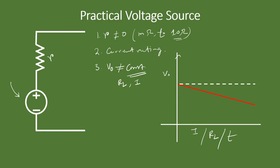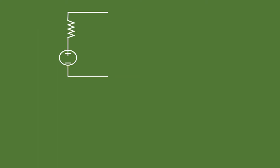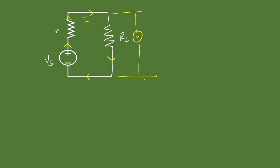Let's examine why this voltage drop happens. Suppose Vs is the supply voltage and R is the internal resistance of the cell. Connecting an external load resistance RL, a current I flows from the positive terminal, through the internal resistance, through the load resistance, and back to the negative terminal, completing the circuit. By Ohm's law, there is a voltage drop across the internal resistance equal to I times R. The output voltage measured by a voltmeter across the load terminals is therefore the supply voltage minus this voltage drop.